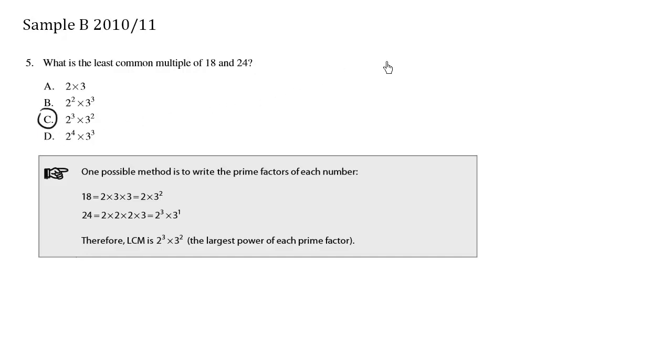Now, another way to do it is write down the numbers 18 and 24, and just draw a line like this, and just pull out the biggest number possible. The biggest number I can think of is 6. So when I pull out a 6, I get 6 times 3 is 18, 6 times 4 is 24.